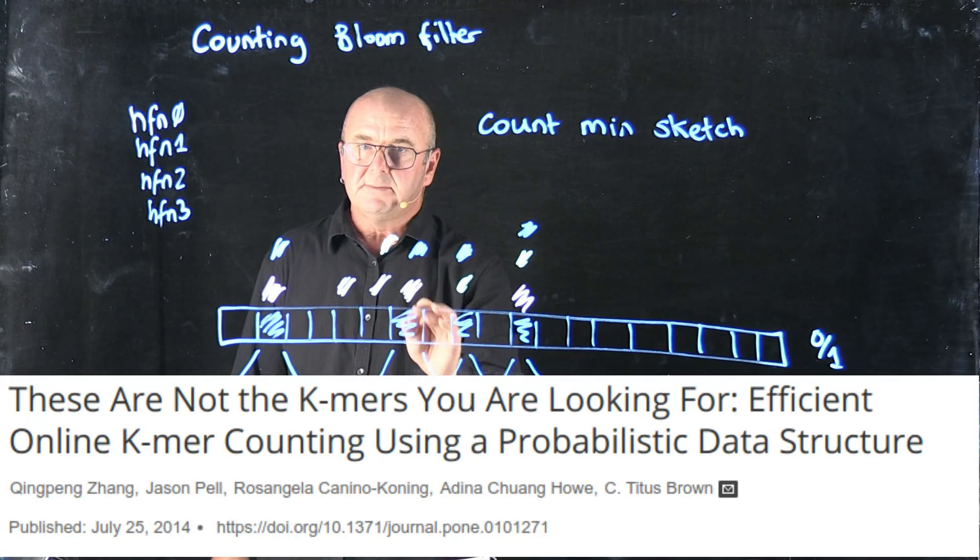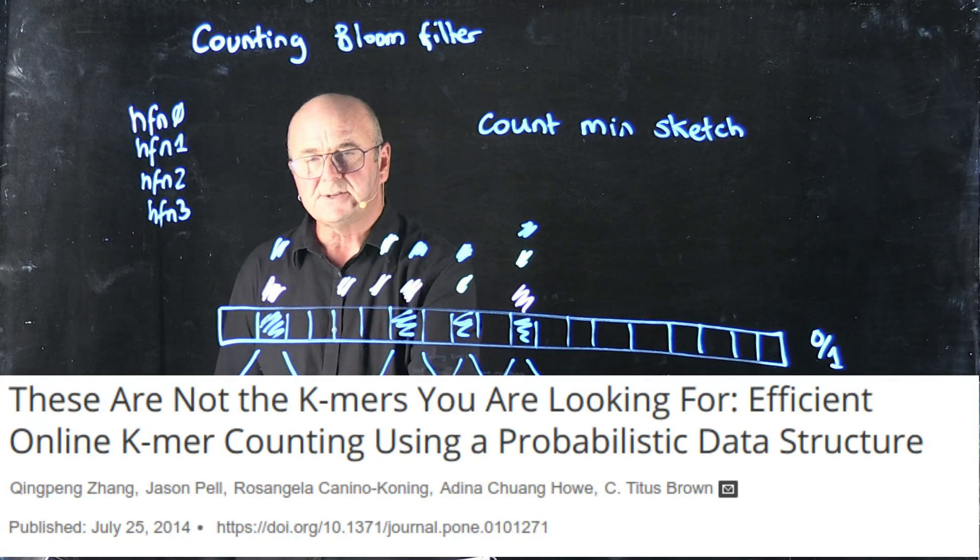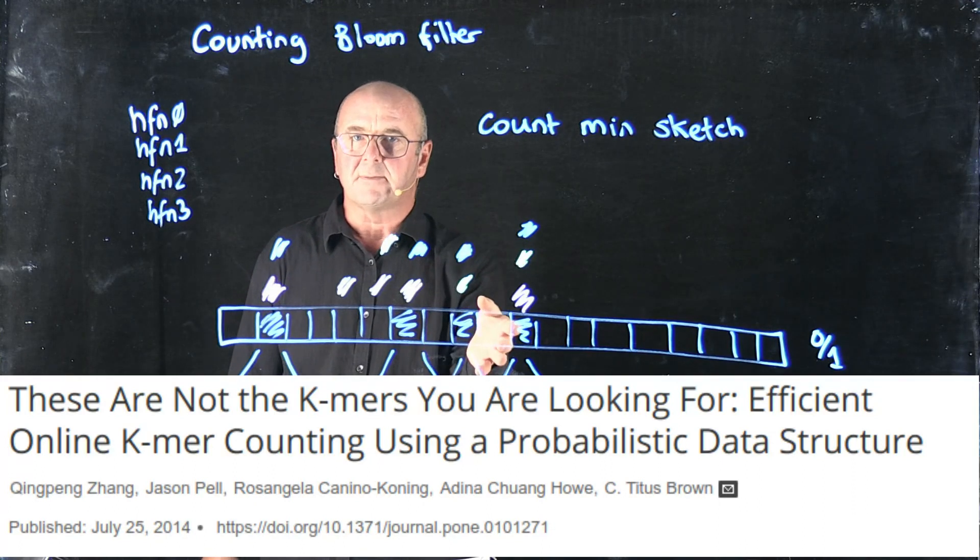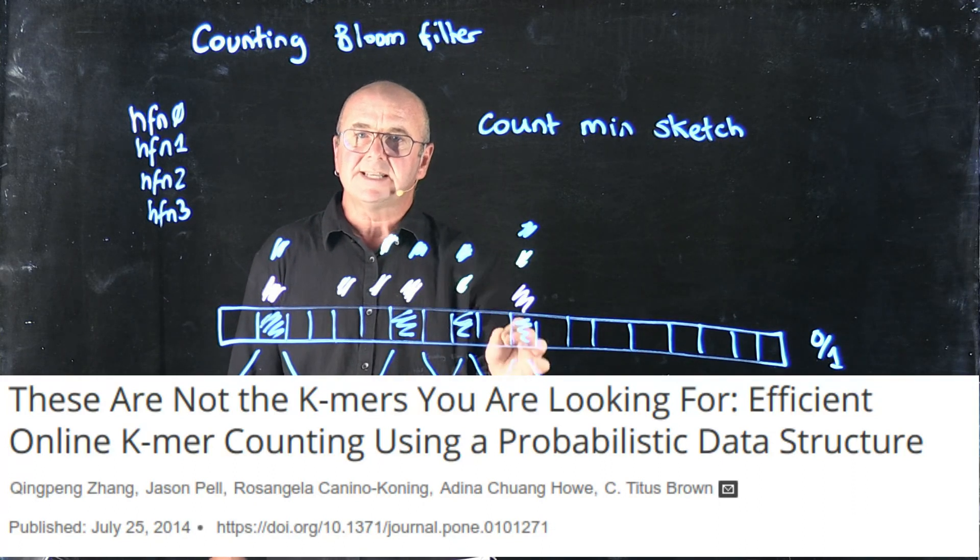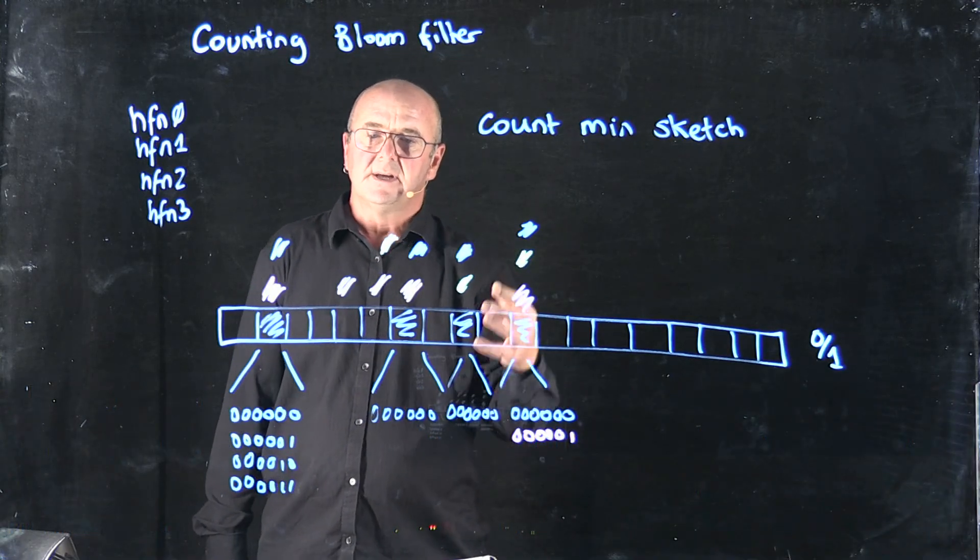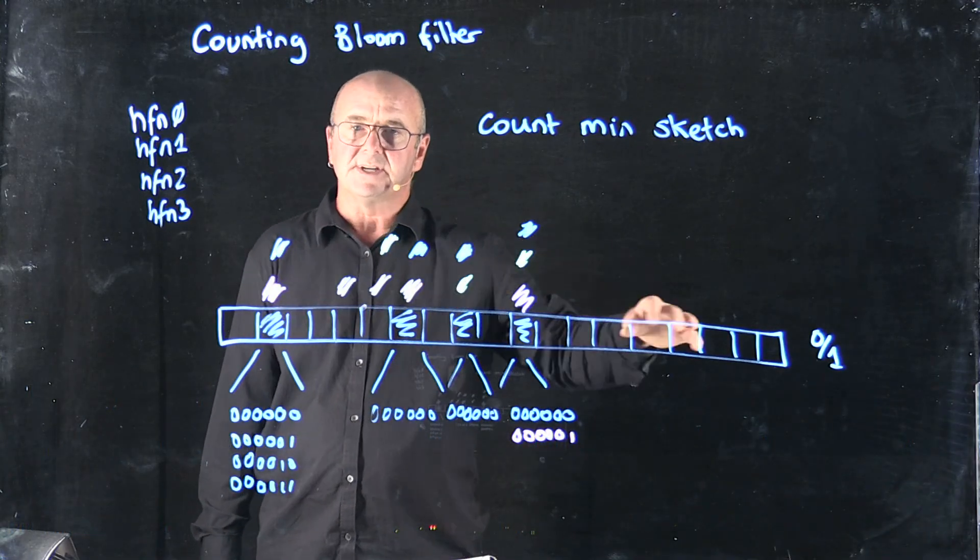What you need to remember about it is that the counts you get out at the end are approximate. We can't guarantee that the counts you get out at the end are correct, because multiple k-mers could contribute to each of your bins.